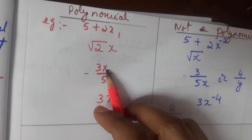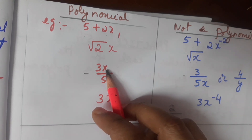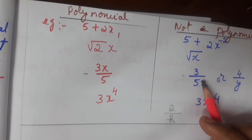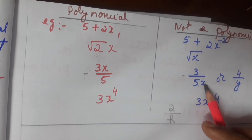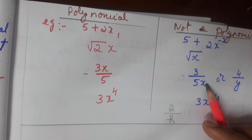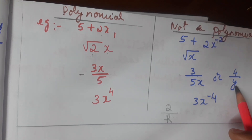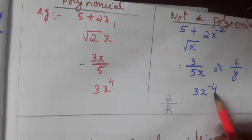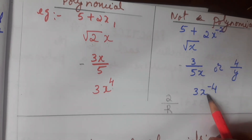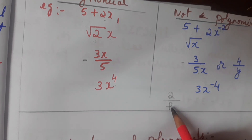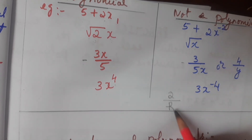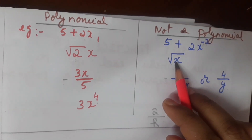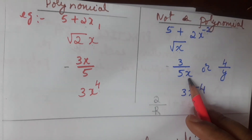Minus 3x by 5 — x is in the numerator, we can write that, but a variable should not be in the denominator. 3 by 5x: 3 is no problem, 5 is no problem, but x is in the denominator, so it is not a polynomial. 4y with y in the denominator — variable in denominator — so it is not a polynomial. 3x to the power 4 is a polynomial, but 3x to the power minus 4 has a negative power, so it is not a polynomial. 2 by R: R is a variable in the denominator, so it is not a polynomial. The rules: inside square root the variable should not be; negative power should not be; variable should not be in the denominator.